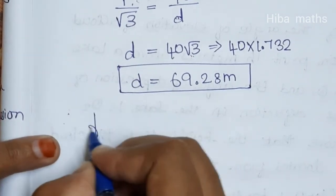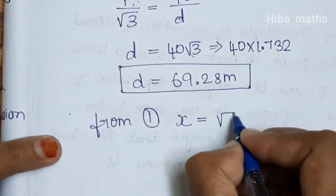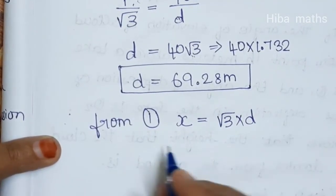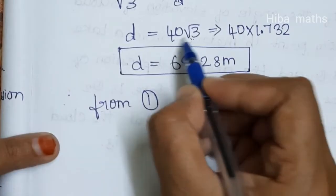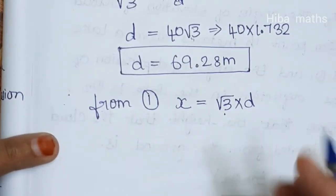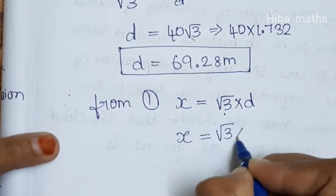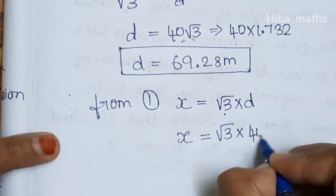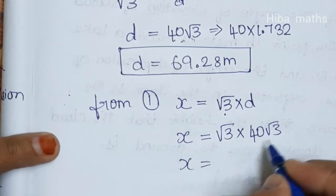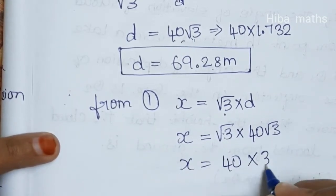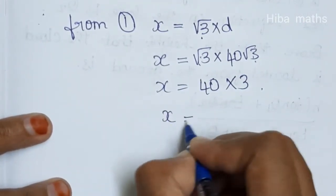From equation 1, x equals root 3 into D. Substituting D equals 40 root 3: x equals root 3 into 40 root 3 equals 40 into 3 equals 120.